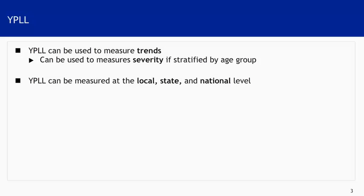YPLLs are often convenient to calculate and can measure trends over time. If you stratify YPLL by age group, YPLLs can be used to describe severity of illness, with greater severity oftentimes resulting in more deaths at younger ages and higher YPLLs. Data on deaths are needed to estimate YPLLs, so they can be measured at the local, state, or national level assuming death data are available.